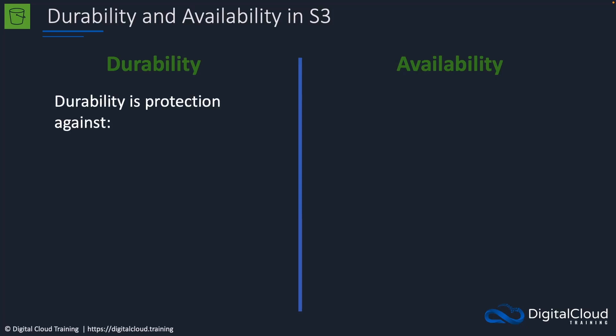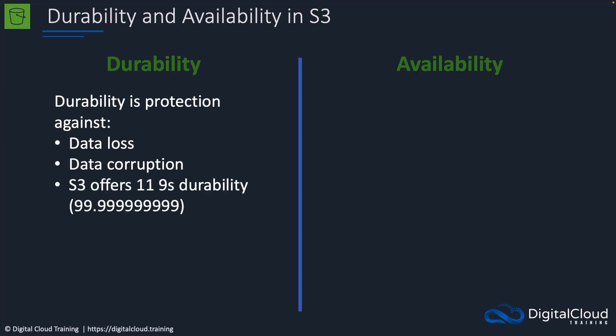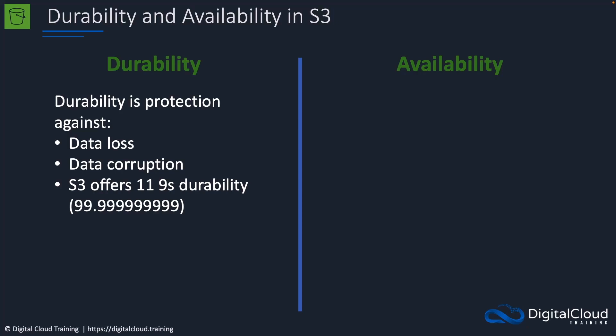So firstly, what is durability? Durability is protection against data loss and data corruption. S3 offers what's called 11 nines of durability — 99.9999999999%. That is a really high level of durability, and it means there's a very low chance that AWS is going to lose your data.